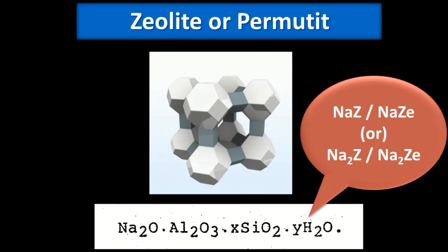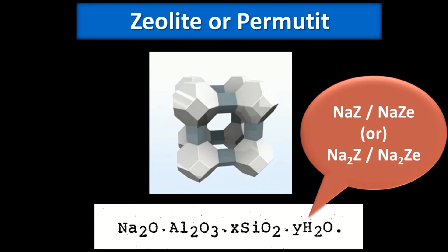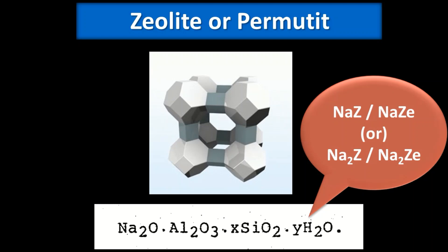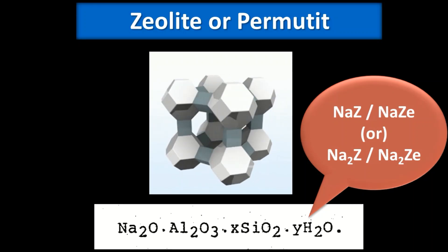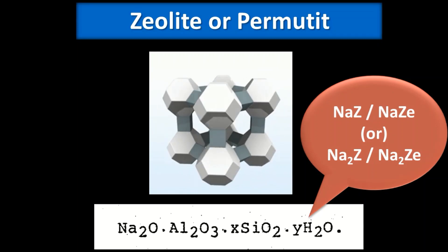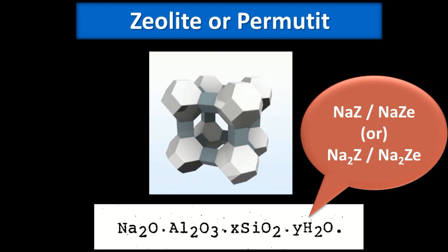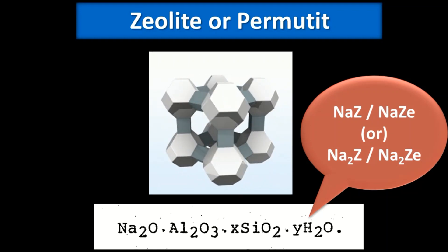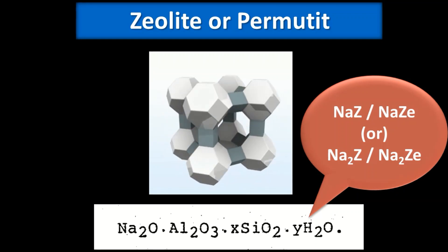Here you can see an animated image rotating with a cage-like, porous structure. These cages or porous portions of the zeolite exchange the cations present in water and give sodium ions to the water. Since we are using sodium zeolite, the exchange is: cations of the water replace the sodium ions of the zeolite.